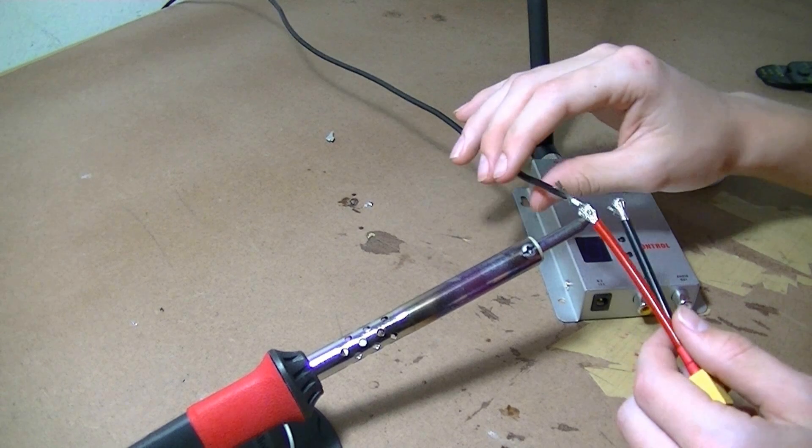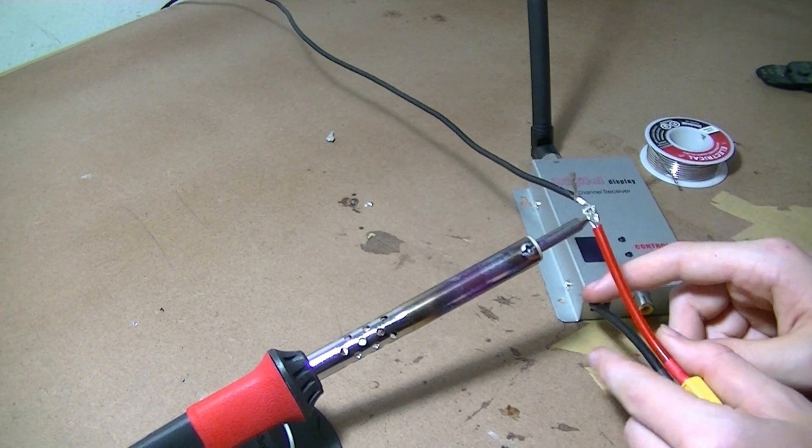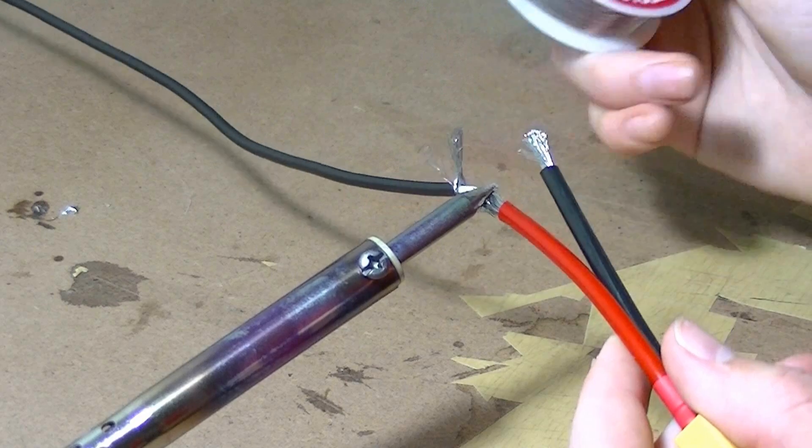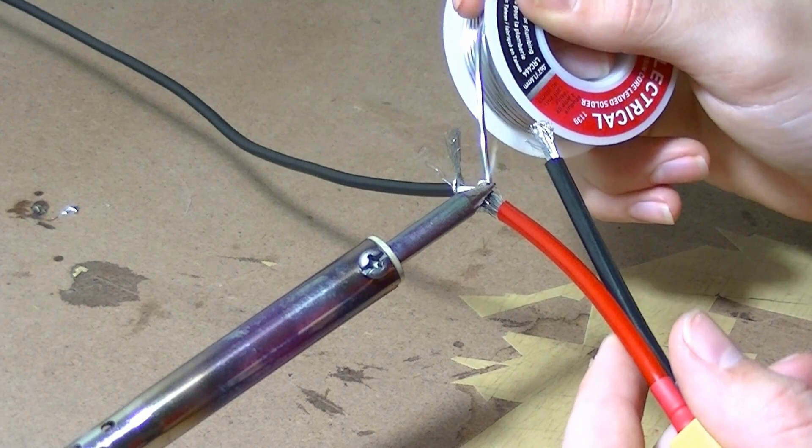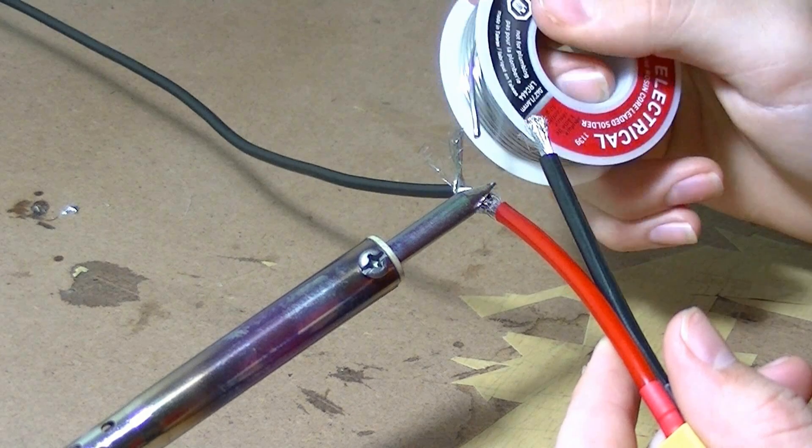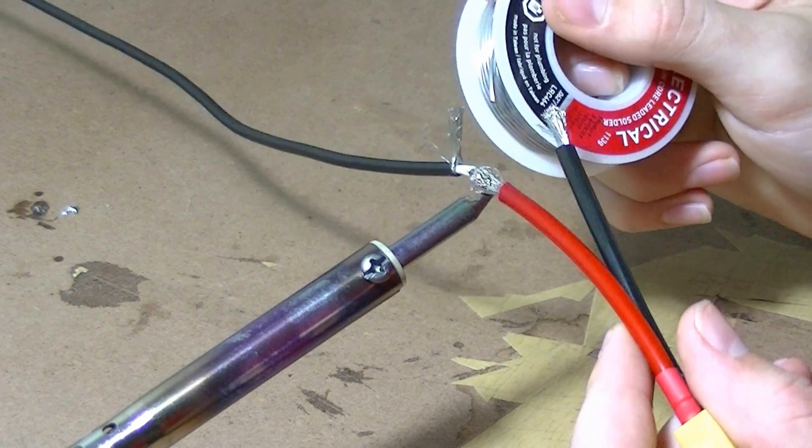If you don't have any helping hands, you can do this, but if you do, you should probably use them because it would work better. Once it's hot enough, you can put your solder on. You'll know it's hot enough because the solder just melts on the wires without touching the soldering iron.